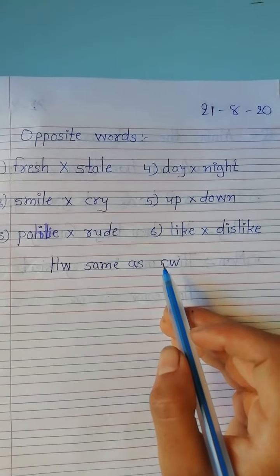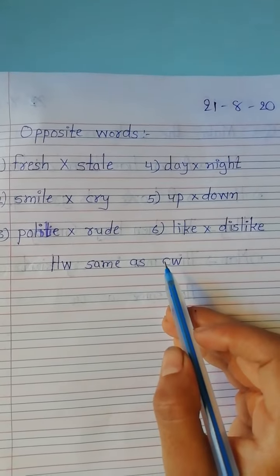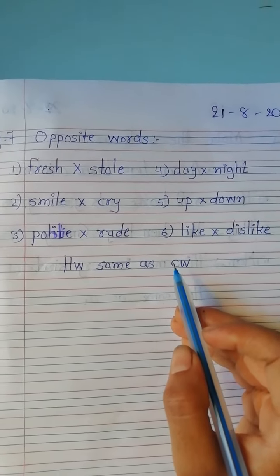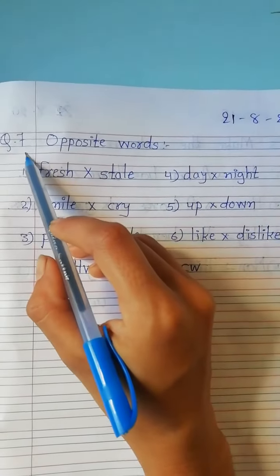Hello students, SMTJV Gems, Standard 2nd, Subject English 1, Lesson No. 5, The Lost Chicken. Last time we learned question No. 6. Now, today we have to learn question No. 7.